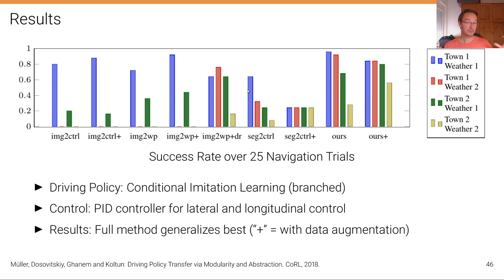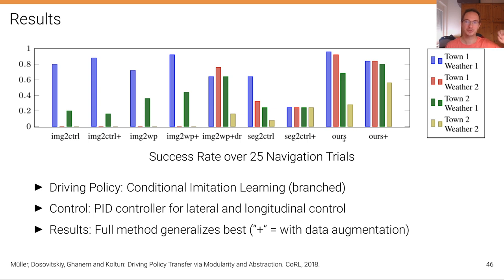Here are the central results of the paper. It presents an ablation study comparing different variants of the model: a model going directly from input images to control, a model going from images to waypoints, a model going from semantic segmentation directly to control, and the full pipeline going from image to semantic segmentation, to waypoints, and then to control.